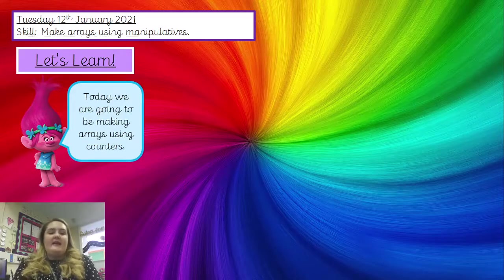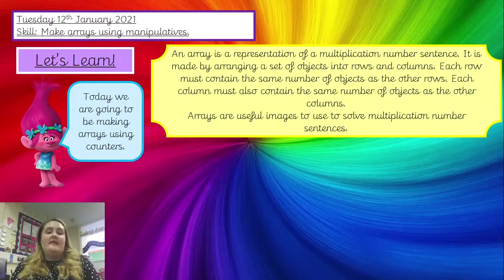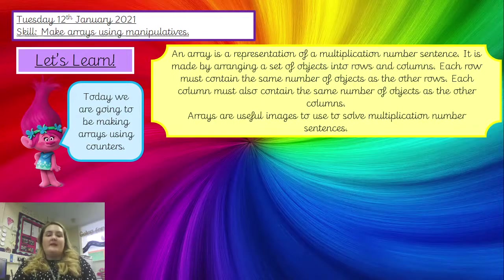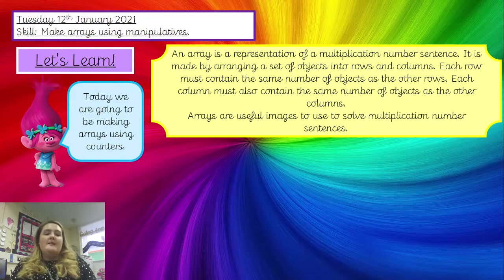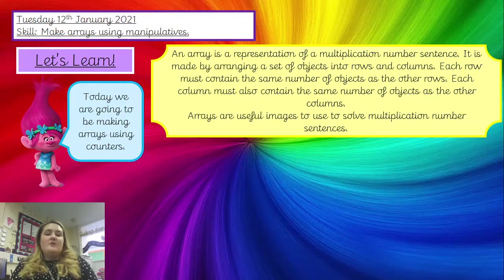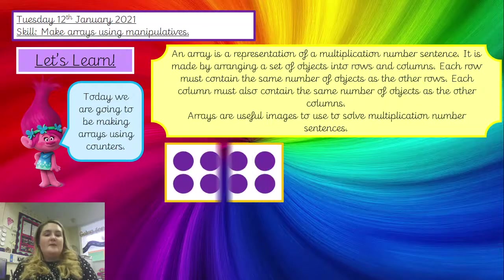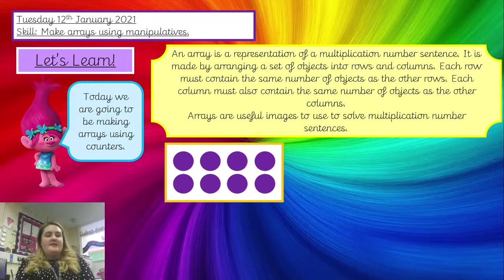Today we're going to be making arrays using counters. We need to learn what an array is. An array is a representation of a multiplication number sentence, and it's made by arranging a set of objects — for example, your counters — into rows and columns. Each row must contain the same number of objects as the other rows; they need to be equal. Each column must also contain the same number of objects as the other columns. Arrays are really useful and are going to help us solve our multiplication number sentences this week.